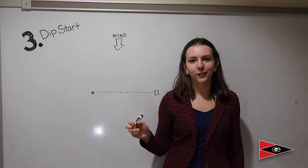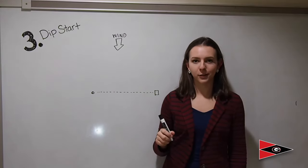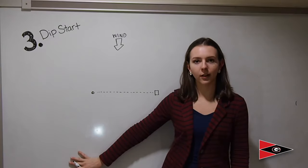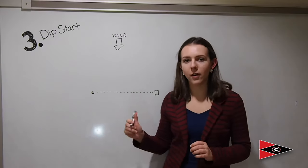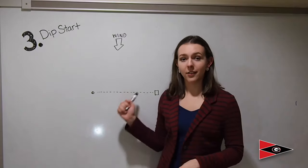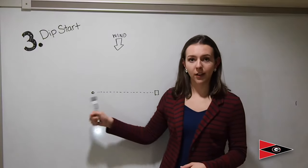This next strategy is called the dip start and is also used when you have a lot of people who are attempting to park on the line. Go watch our other video on line sights because that'll be really important for getting your bearings for setting up this strategy.